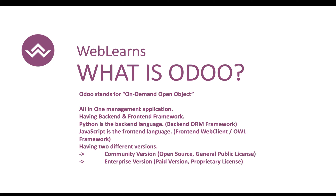The great thing about Odoo is that it's open source, which means you can access the source code for free. There is also an Odoo Enterprise version available, which is paid and offers advanced features compared to the Community version. As of now, Odoo's latest version is version 17, and each year they release a new Odoo version with new features and improvements from both functional and development perspectives.